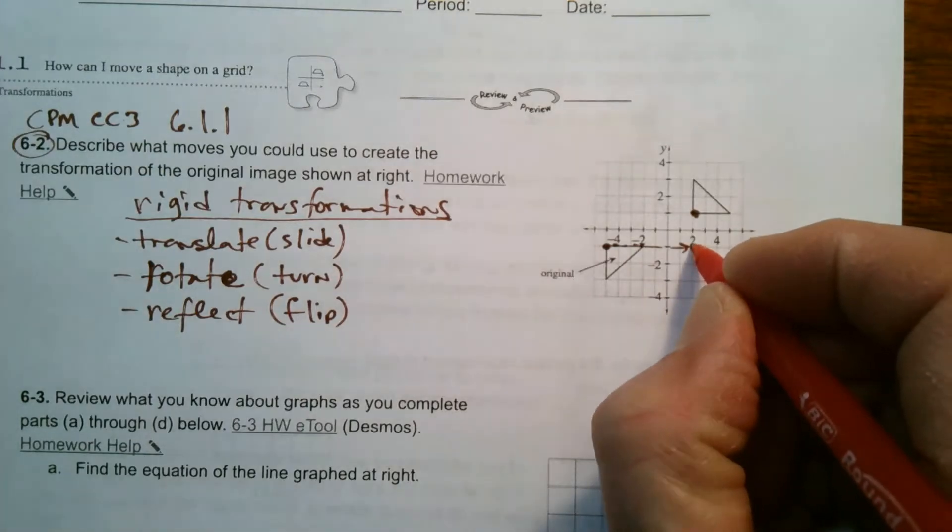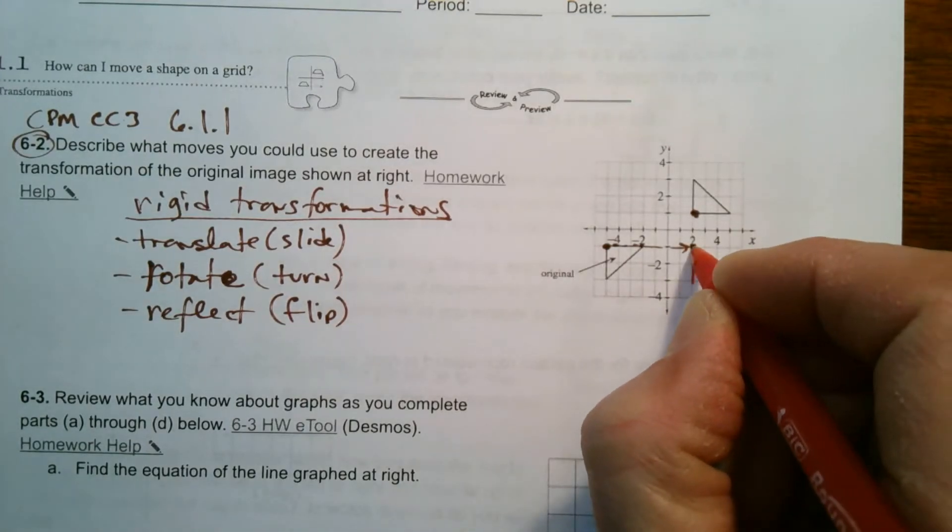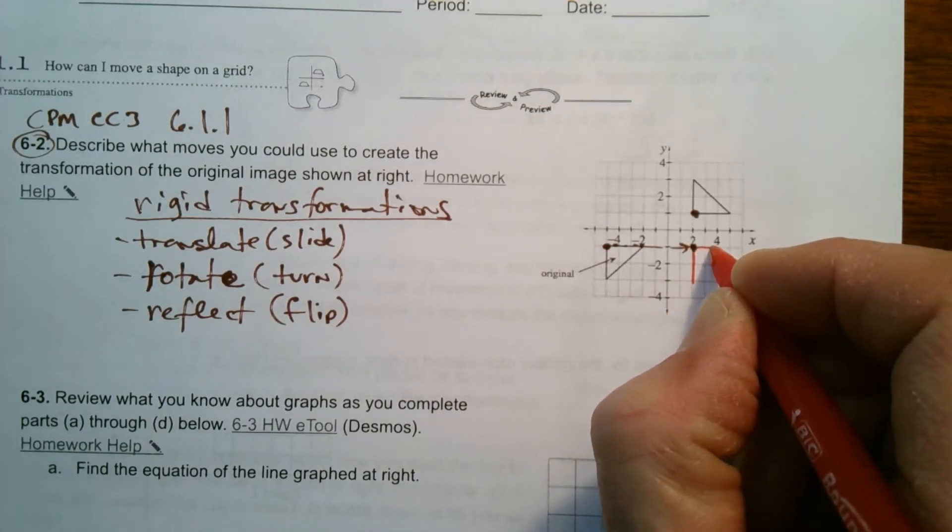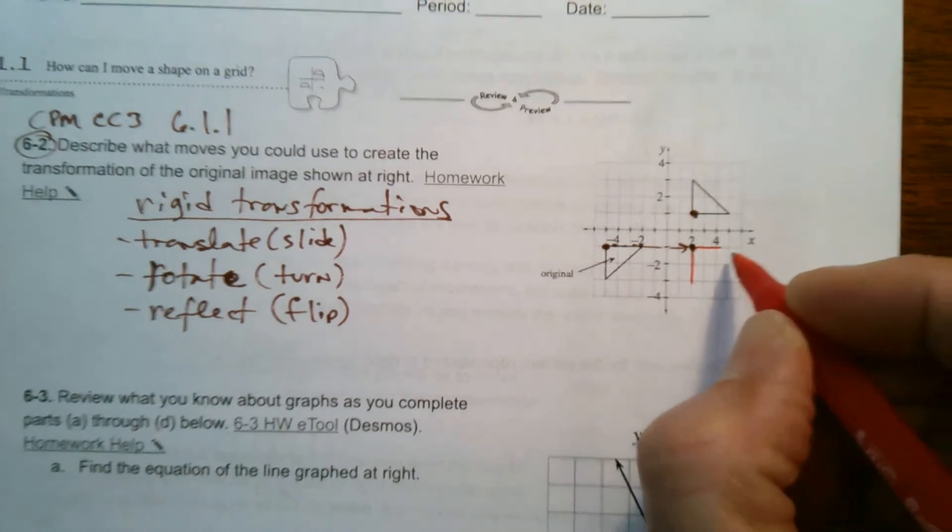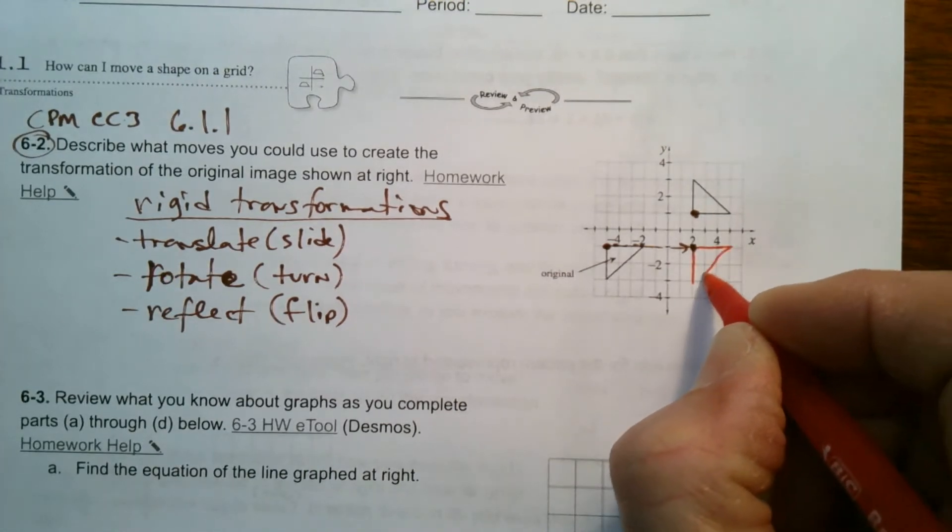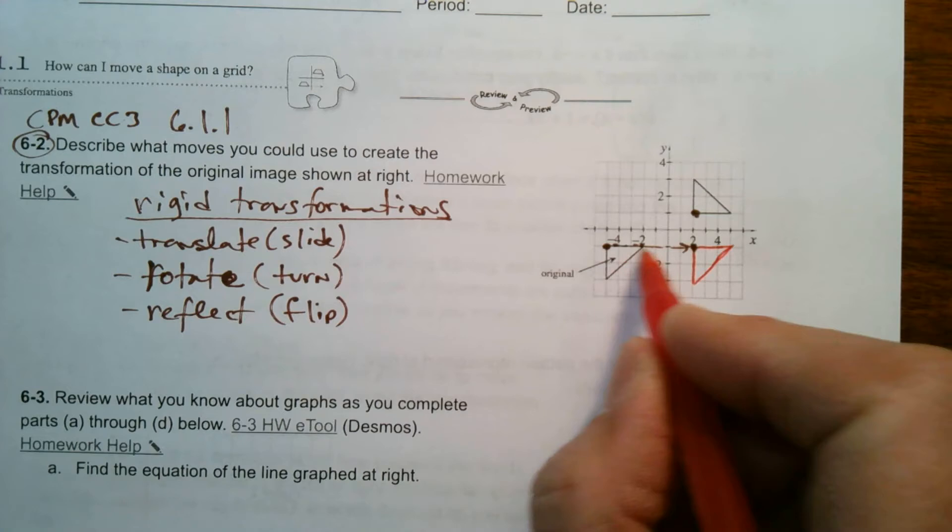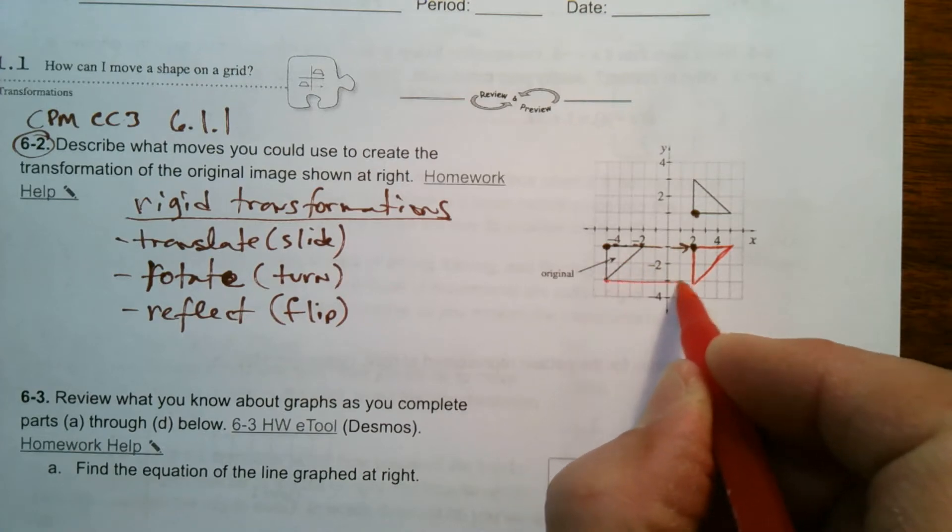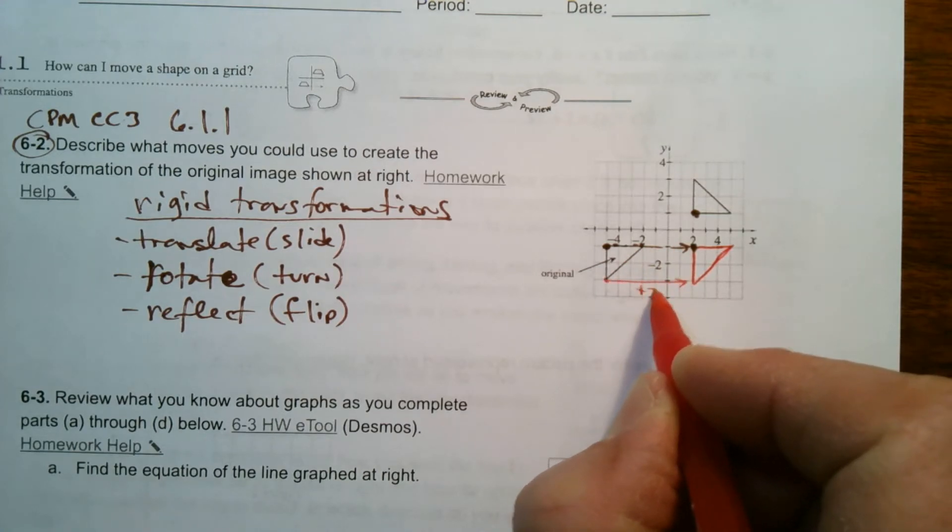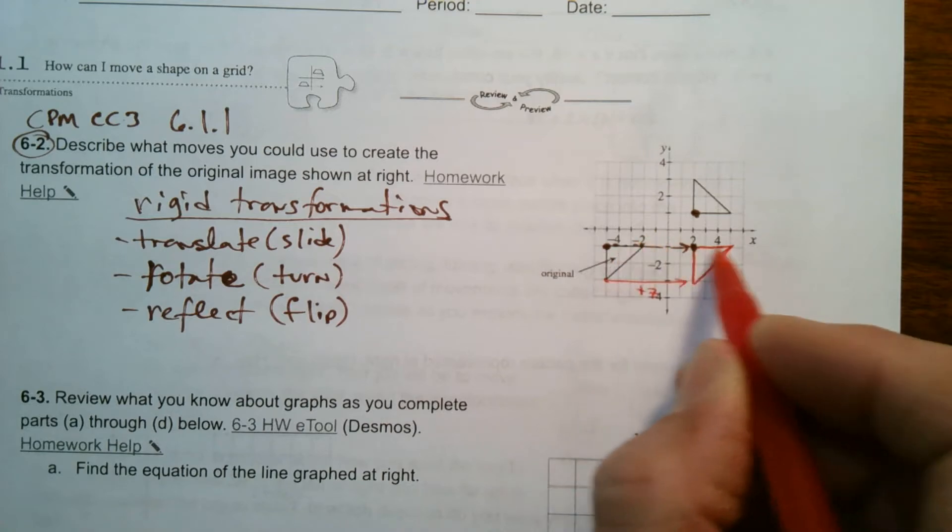Then where would it be? It would look if I moved it, it then would look like this right to there and there. So if I just slid that over, every point is going to slide over plus seven. I'm going to go seven over.